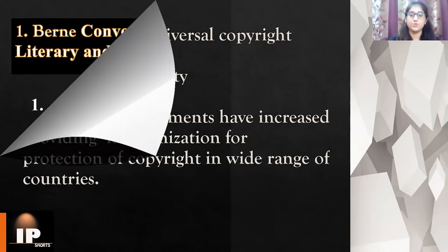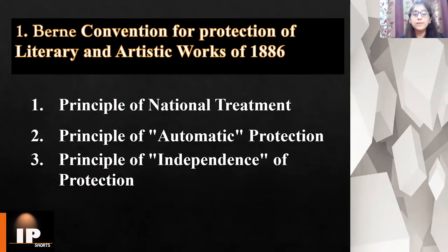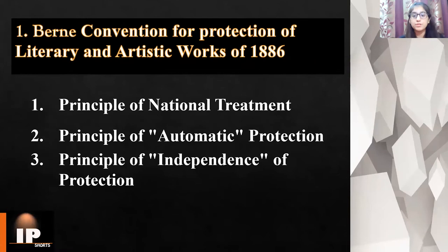The first convention is the Berne Convention for the Protection of Literary and Artistic Works of 1886. The Berne Convention deals with the protection of works and the rights of their authors. It lays down three basic principles. The first principle is the principle of national treatment, which says that any work originating in one of the contracting states must be given the same protection in other contracting states as those states give to their own nationals, without any discrimination.